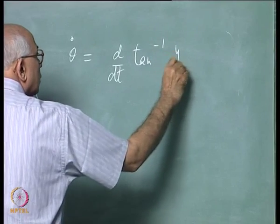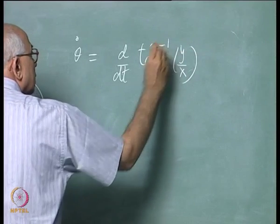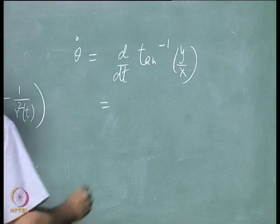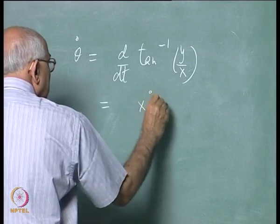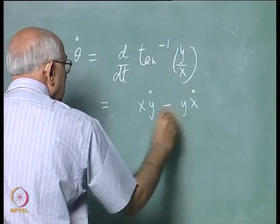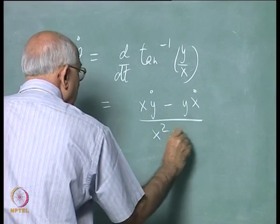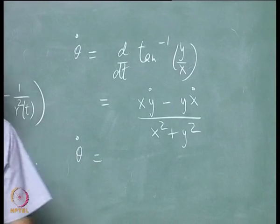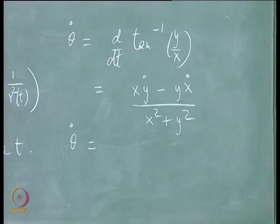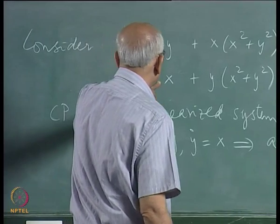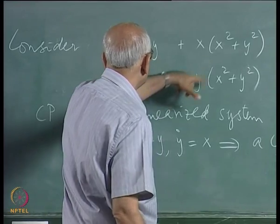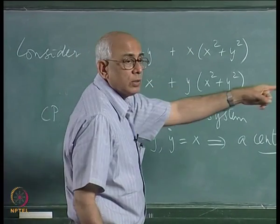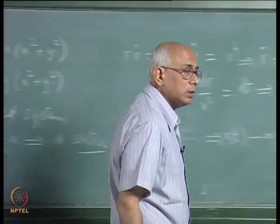Moreover, if you work in plane polar coordinates and look at what theta-dot does: theta-dot equals (x times y-dot minus y times x-dot) divided by (x-squared plus y-squared). In the present problem, if I multiply the first equation by x and the second by y and subtract, these terms cancel and you end up with (x-squared plus y-squared) divided by the same thing, so theta-dot equals 1.